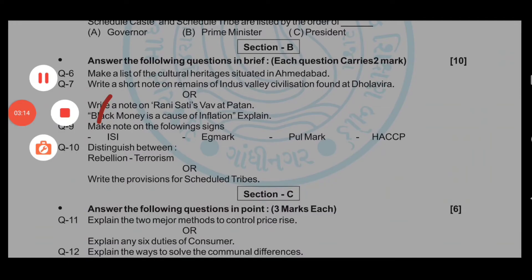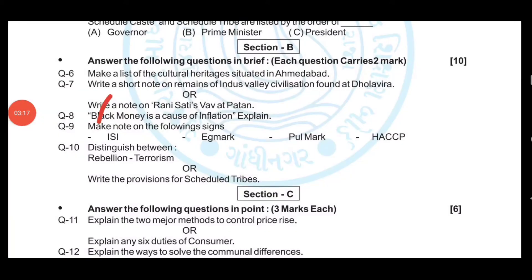Now we are going to solve Section B: Answer the following questions in brief. Each question carries two marks and the total marks of this section is 10. Question number six: Make a list of cultural heritage sites situated in Ahmedabad. The answer to this question will be seen on screen.